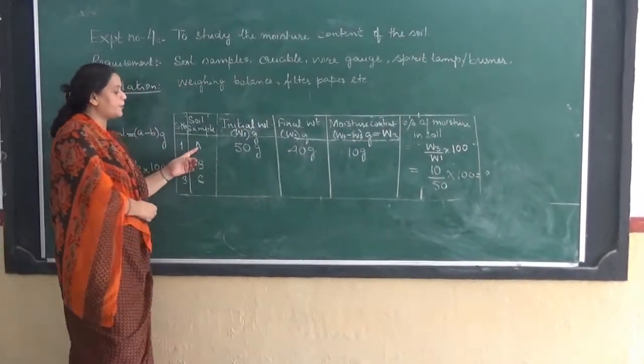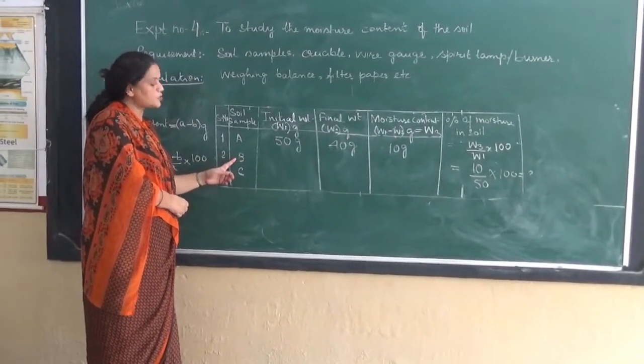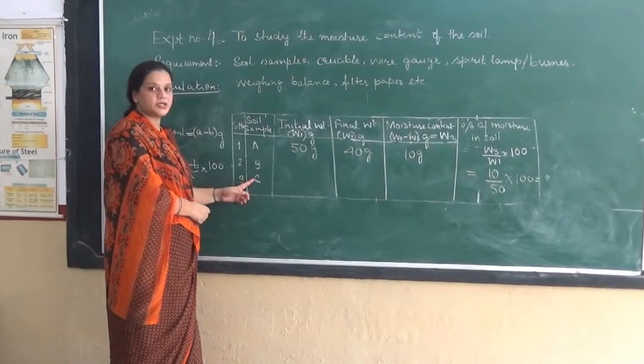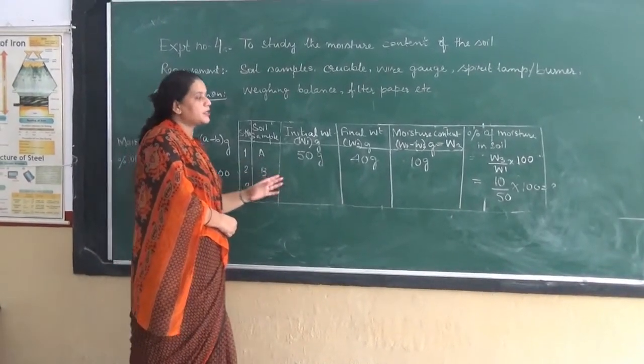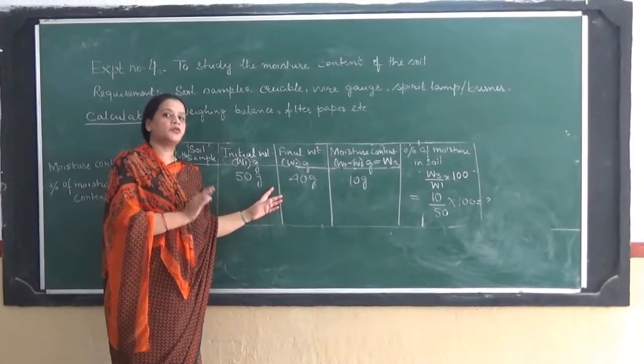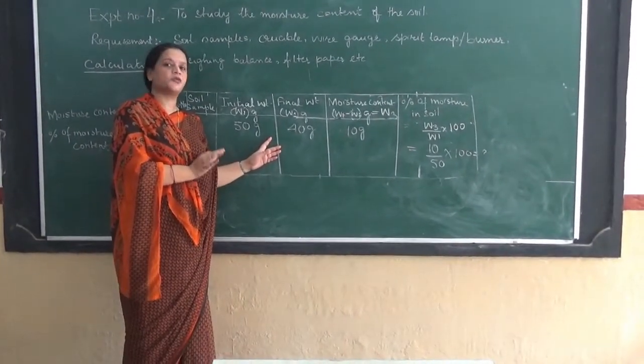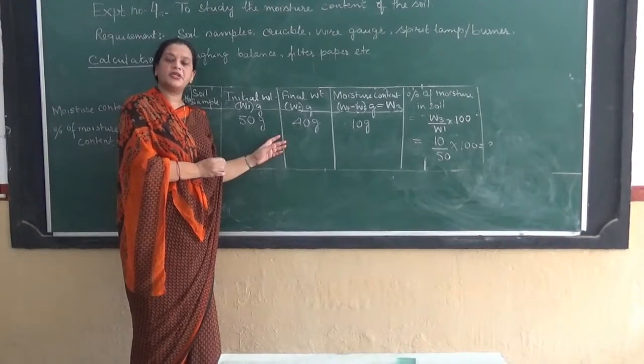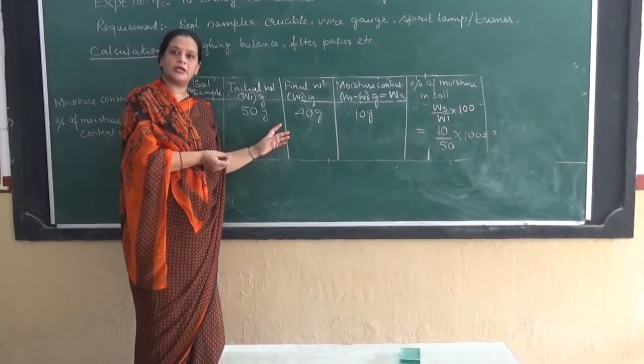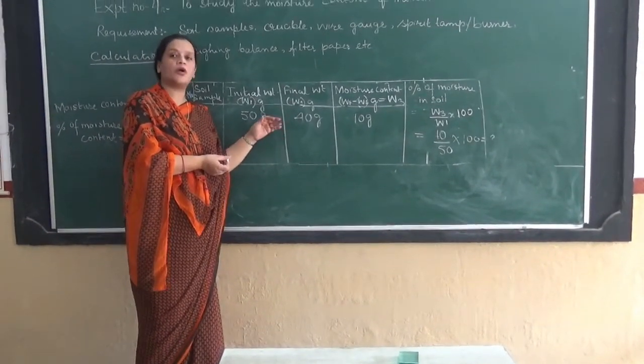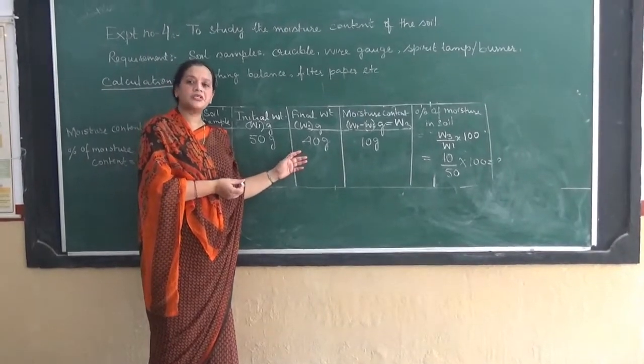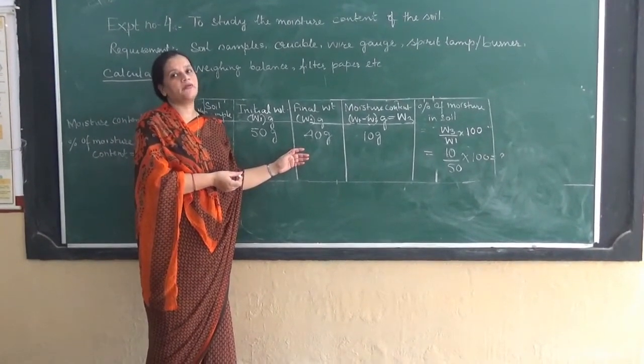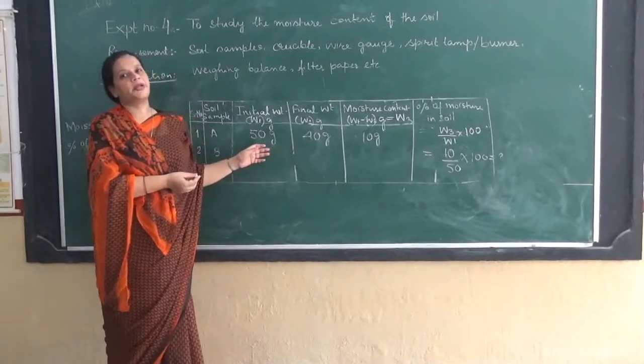So you can repeat the same experiment by using sample B and sample C. Now lastly, the moisture content of the soil is dependent upon the texture of the soil. The higher the percentage, the smaller the soil particle will be. The larger the soil particle, more the percolation will be and less the water quantity will be. Thank you very much. We will see you in the next video.